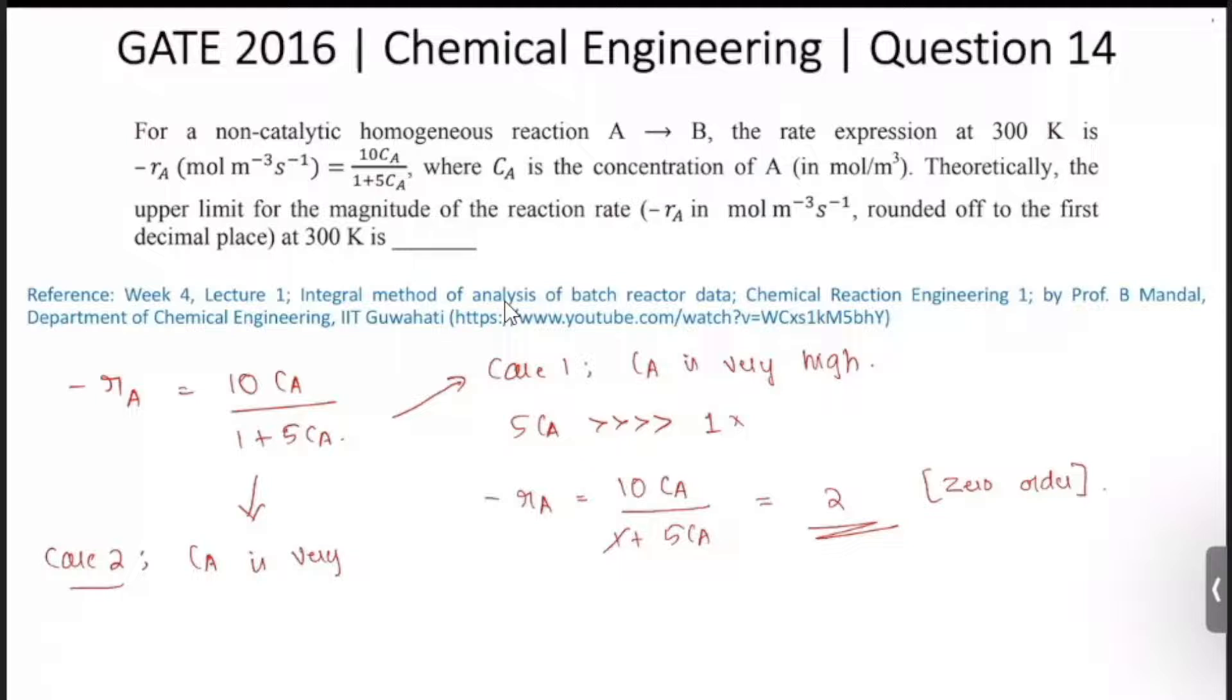So now let's get into the question. Minus r_A is equal to 10 C_A by 1 plus 5 C_A. Now they have asked us to find this r_A at theoretical upper limit.